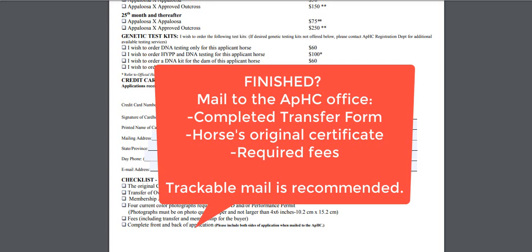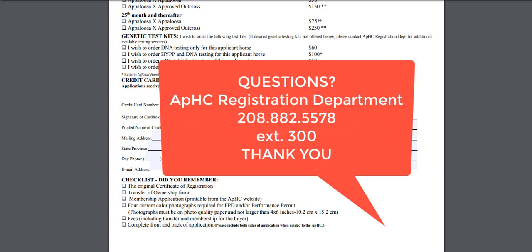Once you have completed the transfer, please send it along with the horse's original certificate and the required fees. We do recommend you mail that to us in a trackable way. If the certificate becomes lost in the mail, you will have to go back to the last recorded owner to have them help you start the process of getting a duplicate certificate issued. If you have any further questions about transferring a horse, please call our office at 208-882-5578 and dial extension 300 for the registration department.